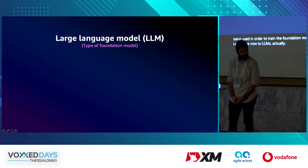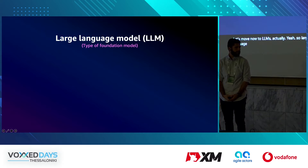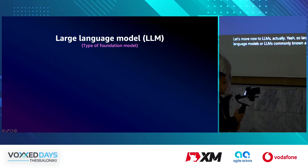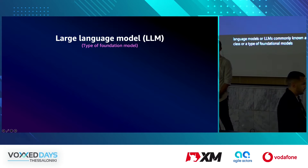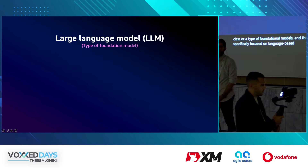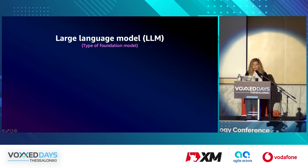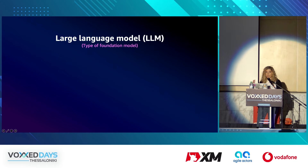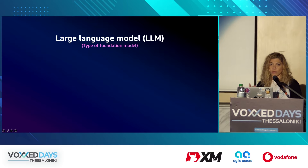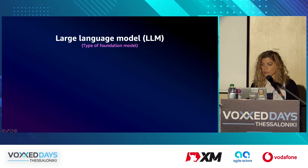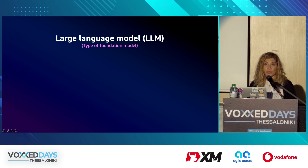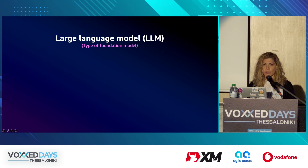Large language models, or LLMs, are a class of foundational models specifically focused on language-based tasks such as summarization, text generation, and open-ended conversation. In very simple terms, what they do is predict the next word. This capability was made possible by a new neural network architecture introduced in 2017 called Transformers. This architecture streamlined the training process of large language models with exceptional efficiency and versatility, which was not possible before.